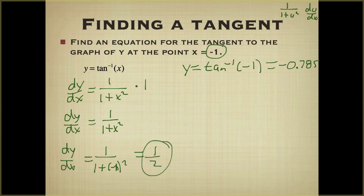We have a point. Our point is negative 1, negative 0.785. And so we can write our tangent line. y equals our y coordinate, negative 0.785, our slope is 1 half, and x minus a negative 1, which is x plus 1.